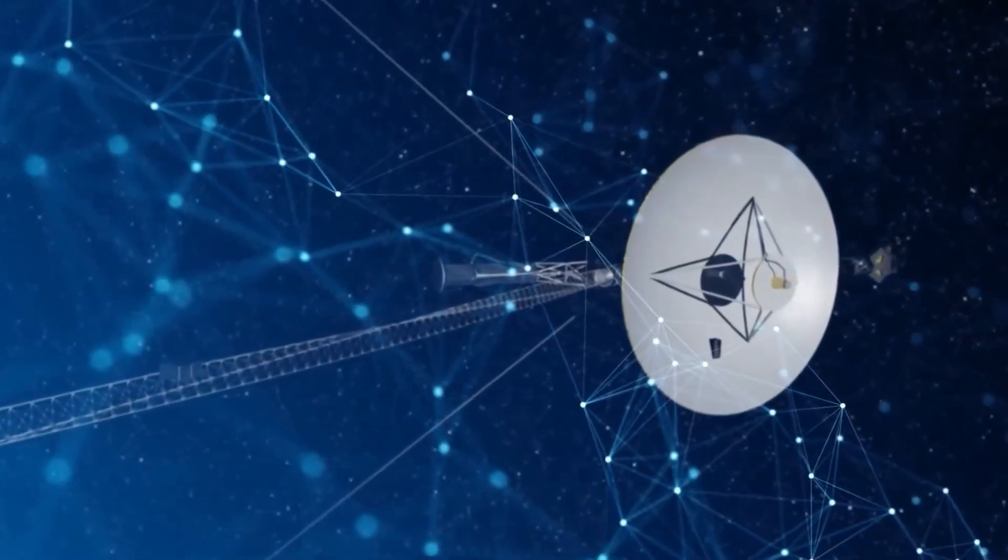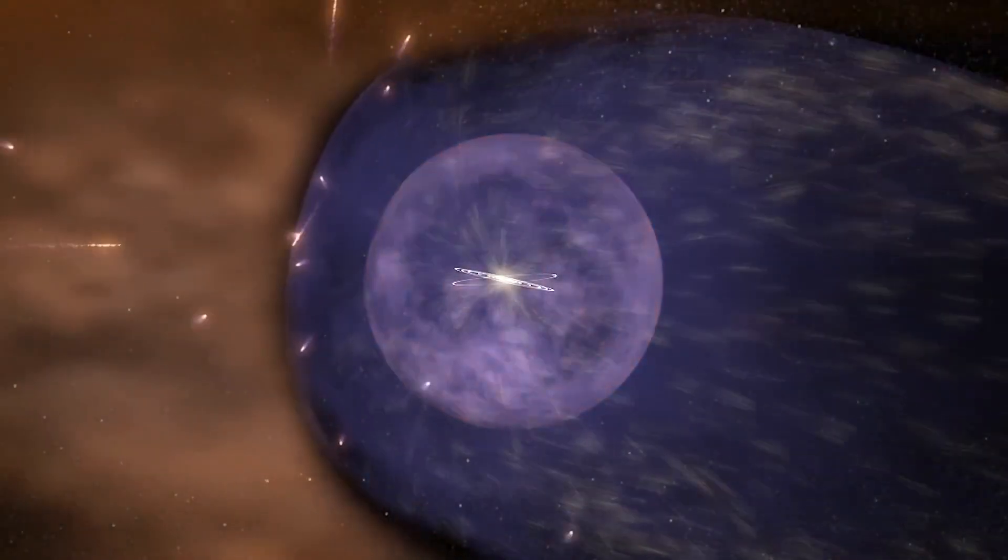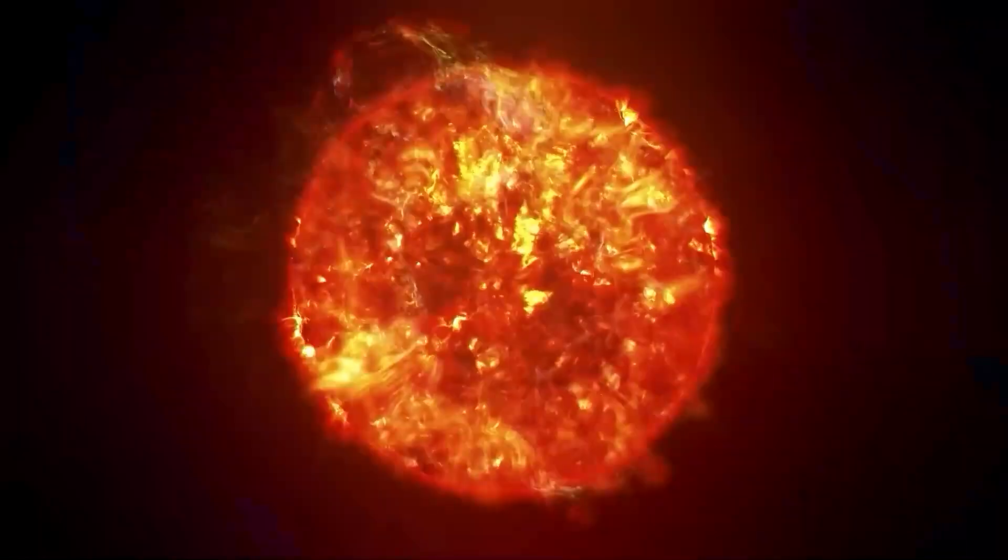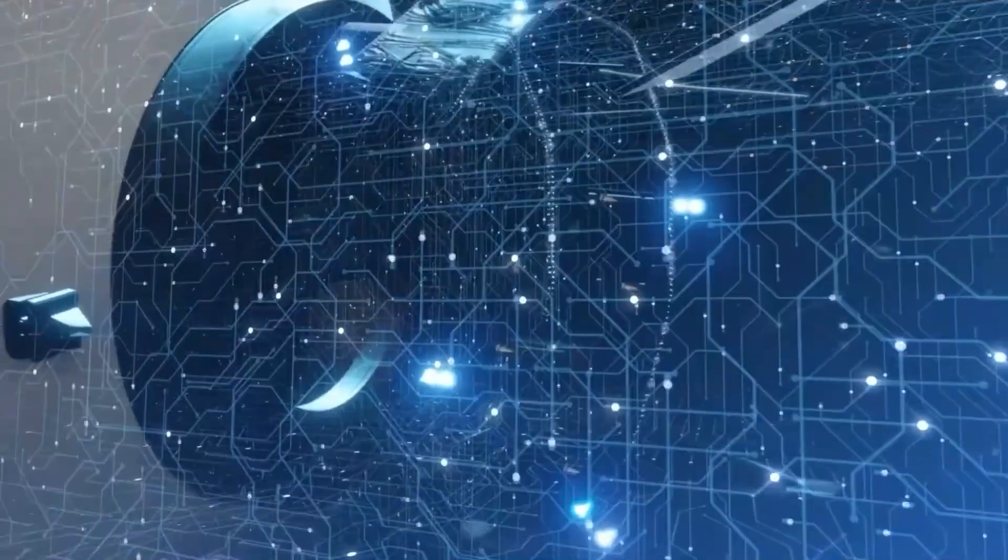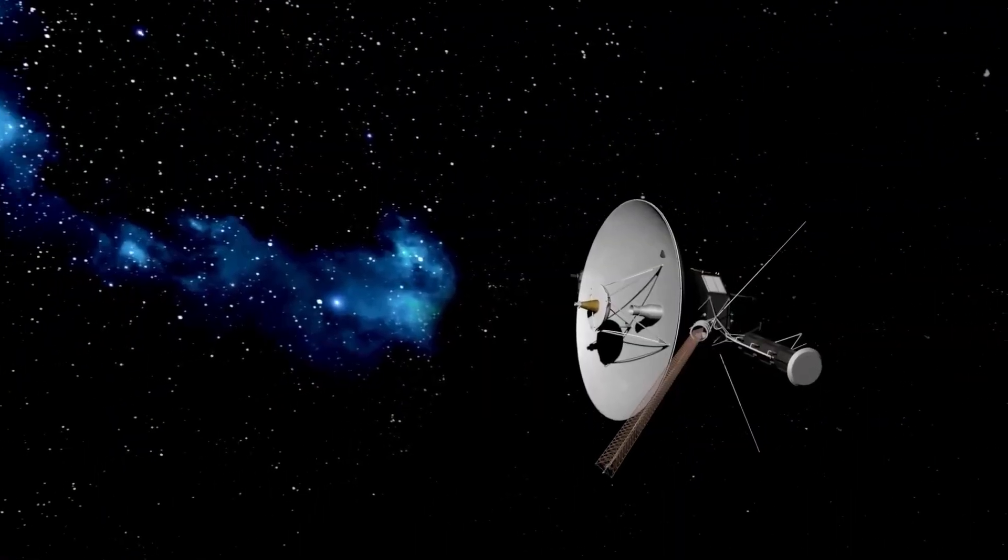Voyager's most historic moment came on August 25, 2012, when it became the first human-made object to cross the heliopause, the boundary where the sun's solar wind gives way to the interstellar medium. This transition marked humanity's first direct sampling of the space between stars.